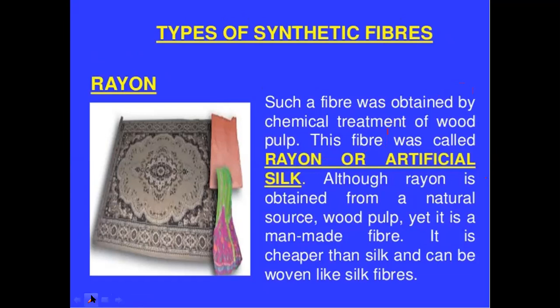You might wonder — if rayon is made from wood pulp, why is it not a natural fiber? That's because chemical treatment has been applied to the wood pulp (cellulose), so we get a synthetic fiber. This fiber is called rayon, or artificial silk. Although rayon is obtained from a natural source (wood pulp), it is a man-made fiber and it is cheaper than silk.